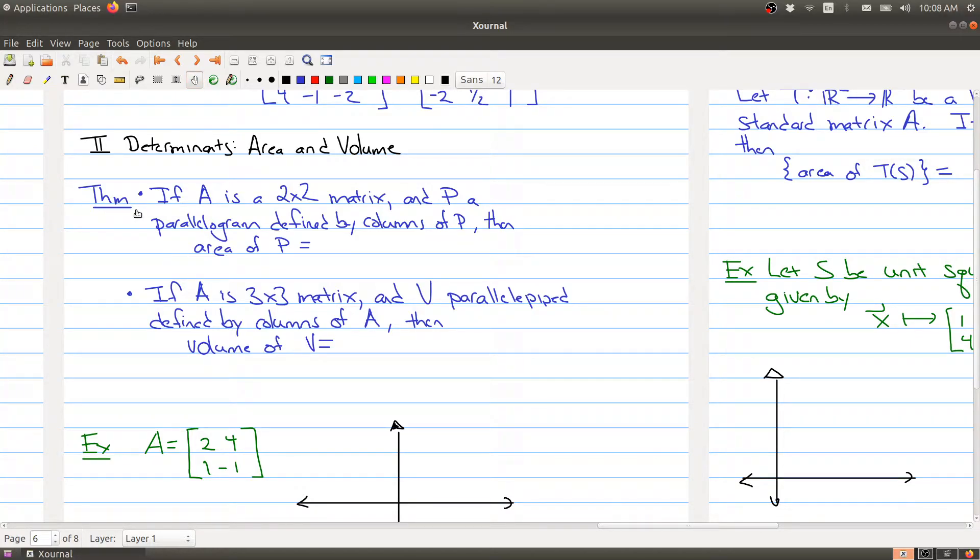So here's the theorem. We'll just state the theorem and I'll give you an example. If you have a two-by-two matrix and P is the parallelogram defined by the columns of P, and we'll do an example of this in a second if you can't visualize it, then the area of P is actually going to be equal to the absolute value of the determinant of A. So one thing to take away is somehow the determinant is measuring area. And similarly, if A is a three-by-three matrix and V is the parallelopiped defined by the columns of A, then the volume of V is given by the determinant of A, taking the absolute value signs because area or volume are not allowed to be negative.